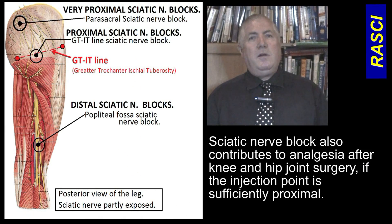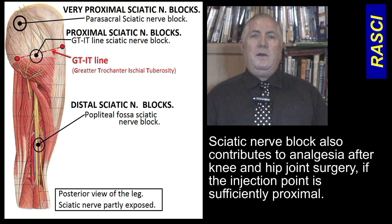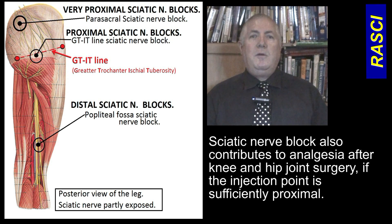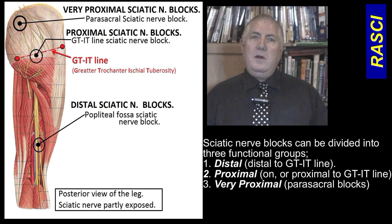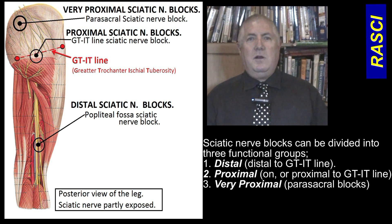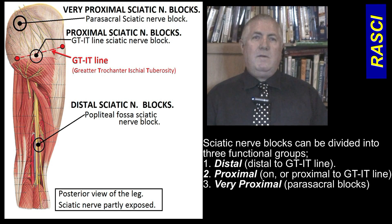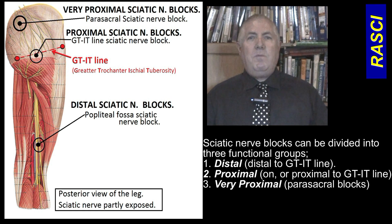In the upper leg, the sciatic nerve also supplies the posterior knee joint capsule and the posterior hip joint capsule with sensation. This biggest nerve of the body is about 50 cm long and it can be blocked at 1 cm intervals in innumerable ways from every possible direction.